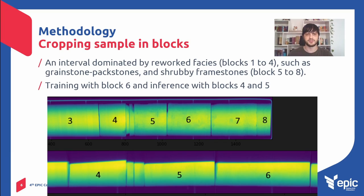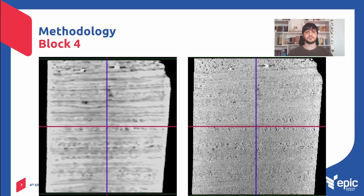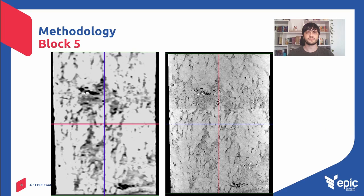For the model, I used block six to train — a shrub block — and blocks four and five to test the performance. This is block four in more detail. You can see the difference between both resolutions, and here we can see way more information. And this is block five — the same idea. We can see the bigger structures and so on.